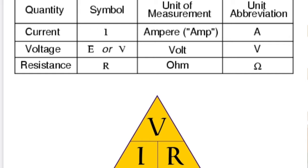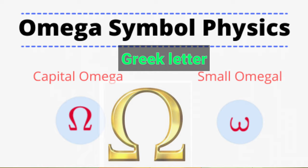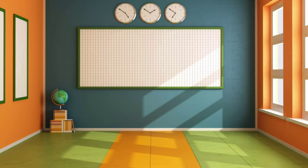We also have resistance, represented by R. In terms of units of measurement: current is ampere or amp, voltage is volt, and resistance is ohm. For unit abbreviations: current uses capital A, voltage uses capital V, and resistance uses the Greek letter omega (Ω). Master that table because it will be useful when dealing with computations or solving equations.